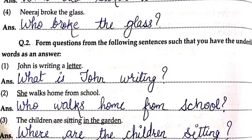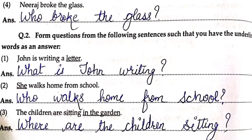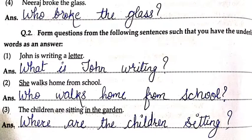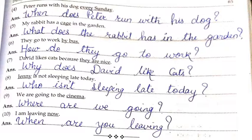Question number two: Form questions from the following sentences such that the underlined word is the answer. First: 'John is writing a letter.' — What is John writing? Second: 'She walks home from school.' — Who walks home from school? Third: 'The children are sitting in the garden.' — Where are the children sitting? So the answer comes: 'The children are sitting in the garden.' Fourth: 'Peter runs with his dog every Sunday.' — When does Peter run with his dog? Fifth: 'My rabbit has a cage in the garden.' — What does the rabbit have in the garden? Sixth: 'They go to work by bus.' — How do they go to work?